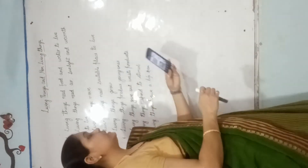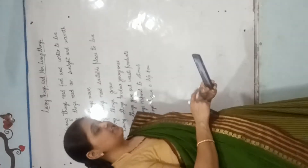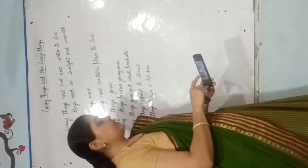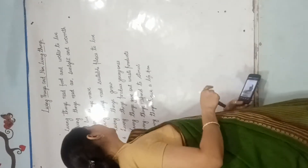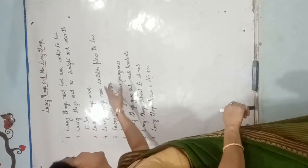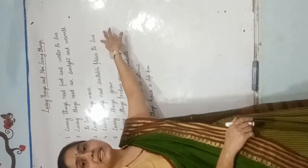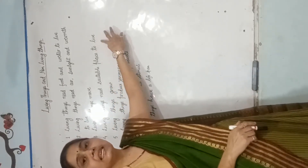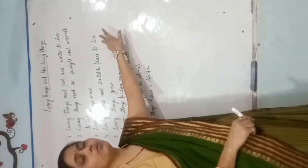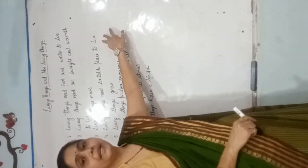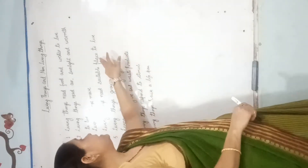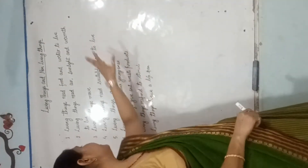चीता और wild cat कहां रहते हैं? ये जंगलों में रहते हैं, जहां बहुत सारी grassland पाई जाती है. These both live over there. तो सारे living things जो होते हैं, उन्हें suitable place चाहिए — जैसे कि Kashmir में रहने वाले बंदे को आप Rajasthan में लाके छोड़ दो, नहीं रह पाएगा. They need a suitable place to live.